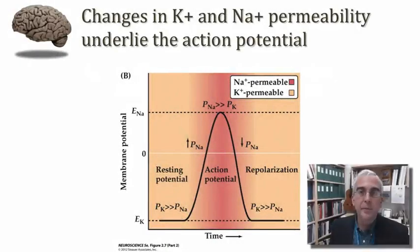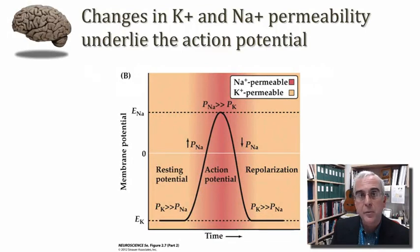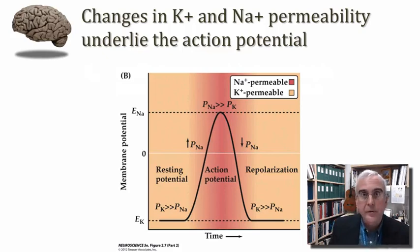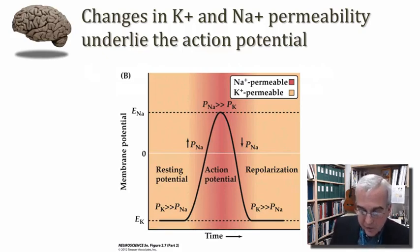Let's begin by reviewing some of our foundational concepts that we introduced last time, and that is that changes in membrane permeability underlie the neuronal action potential. In order to understand these changes in membrane permeability, let's consider some of the principles that are laid out in Figure 2.7.